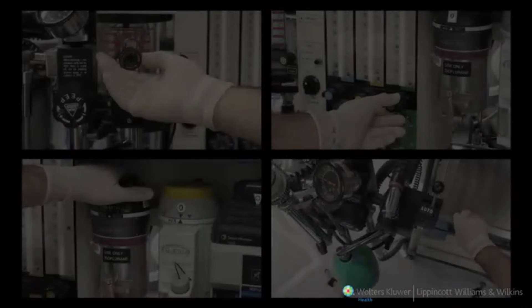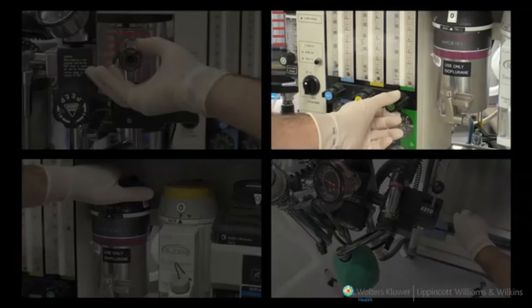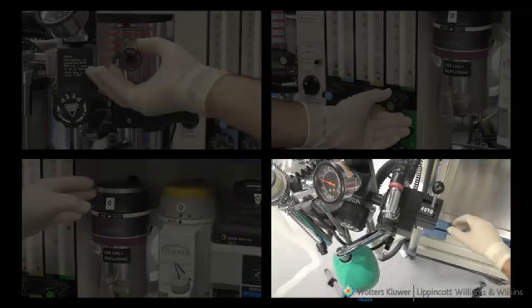In summary, these errors can be prevented by developing a systematic approach to opening the adjustable pressure limiting valve, having an adequate oxygen flow, making sure that the vaporizers are closed, and selecting manual ventilation on the anesthesia machine.